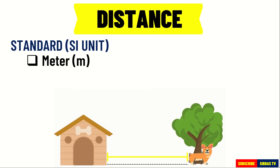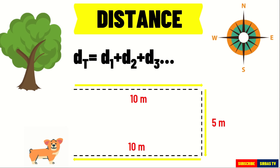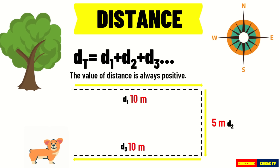To get the distance traveled by an object, we just need to add all the lengths of the path covered by the object. It can be represented by the formula: D, which is the distance traveled, is equal to D1 plus D2 plus D3, wherein D1 is distance 1, D2 is distance 2, and D3 is distance 3. This will depend on the number of lengths covered by the object. The value of distance is always positive.